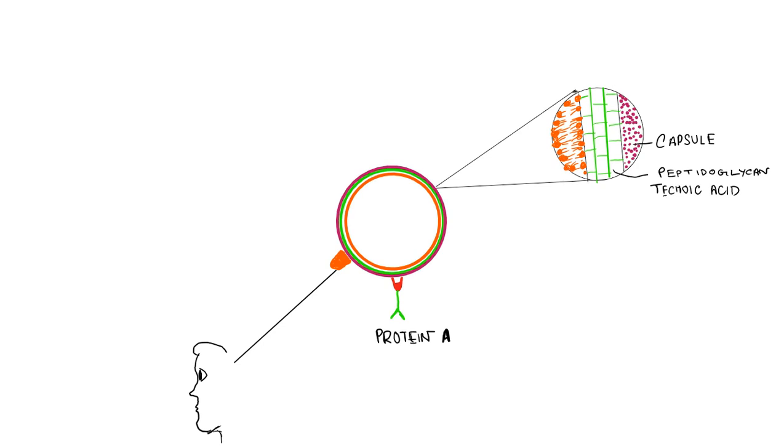They are responsible for infections of the nose and skin of the face. When they are associated with the cell wall, they are known as clumping factor, and when they remain free, they are known as free coagulase.